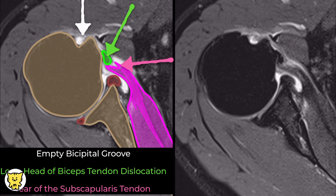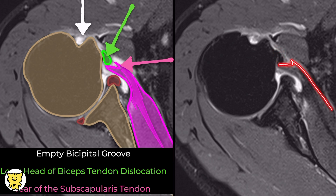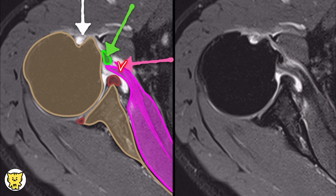The long head of the biceps tendon is absent from the bicipital groove and is instead displaced medially. Associated findings include a tear of the subscapularis tendon, specifically at its attachment to the lesser tuberosity.